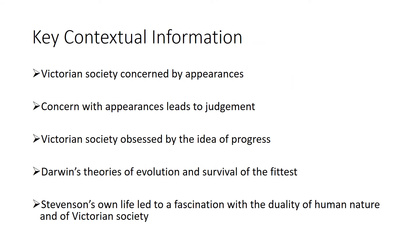Here's some key contextual information which will be important in shaping your understanding of Jekyll. As a recap, we have a Victorian society concerned by appearances, and as a result of that concern with appearances, this idea of appearing a certain way leads to judgment of others who don't conform to the expectation of society. Victorian society is obsessed by the idea of progression, but at the same time fears regression and fears things which challenge their belief system. So there's something hypocritical about that obsession with progress.